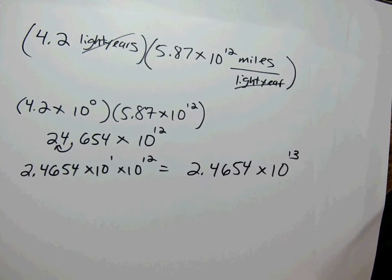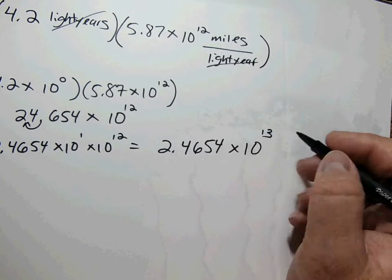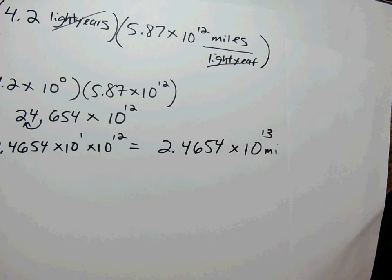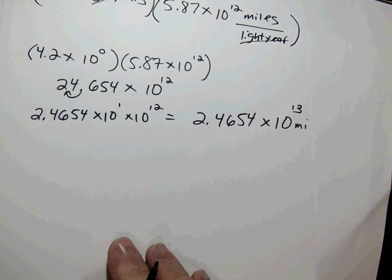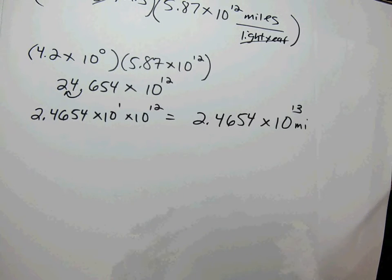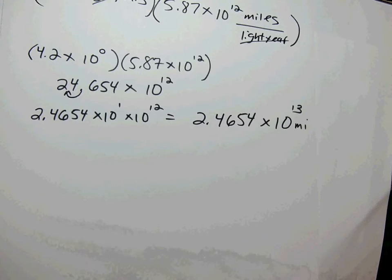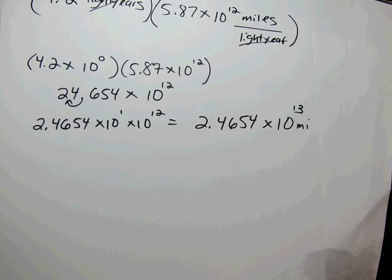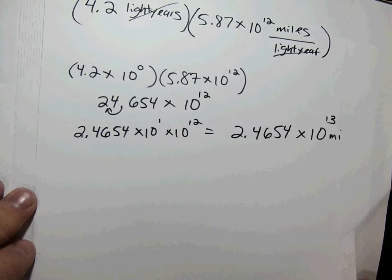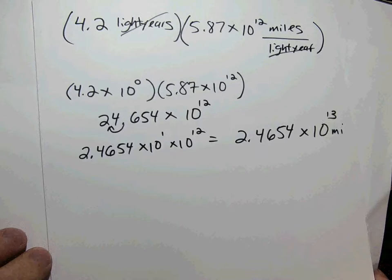The only unit left is miles — 2.4654 times 10 to the 13 miles away. It's a staggeringly far distance. Light takes 4.2 years to get there, and light travels at 186,000 miles per second. So while technology will advance someday, the world of Star Wars and Star Trek is simply not close yet.